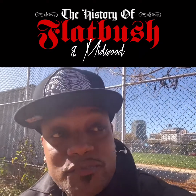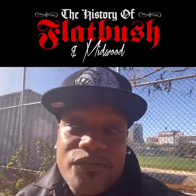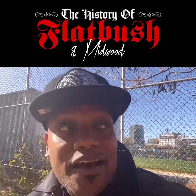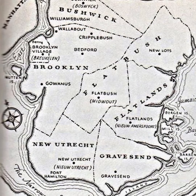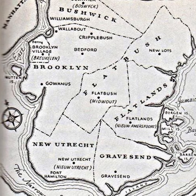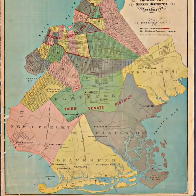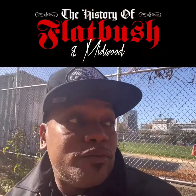Remember, during this period, Brooklyn was subdivided into five or six towns. Within those towns, you had small villages. Within the town of Flatbush, there was a village called Flatbush, or Midwoud, which was Dutch for Middle Woods. Then eventually, when the English took over, it was anglicized to Midwood and Flatbush.